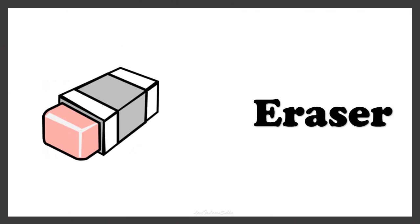Now here we have a picture of ERASER. You have to find the article that comes in front of the word ERASER. The word ERASER starts with the vowel E, so we must use the article AN. This is AN ERASER.